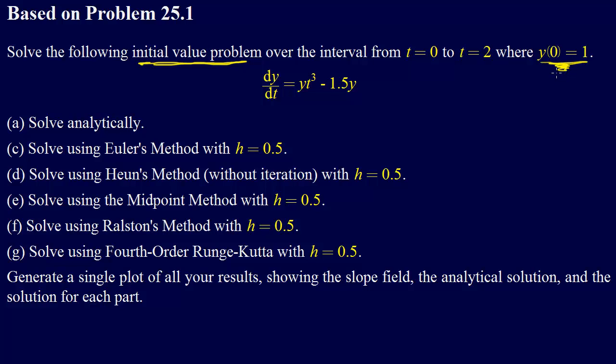And that is the only value that we need, and it's an initial value. So this is an initial value problem, and we're going to start at y of 0, and we get dy dt equals yt cubed minus 1.5y.